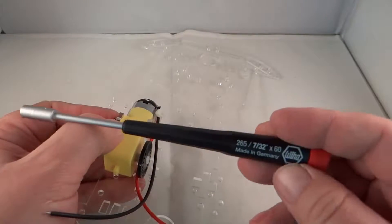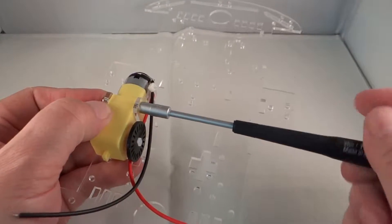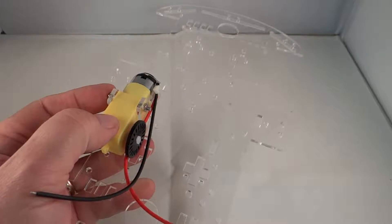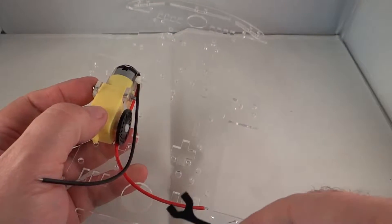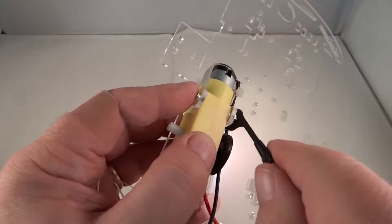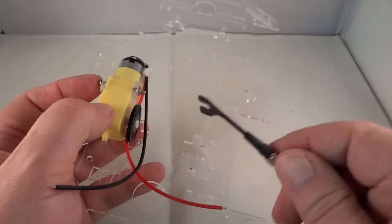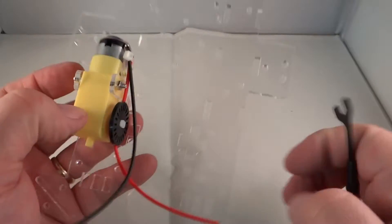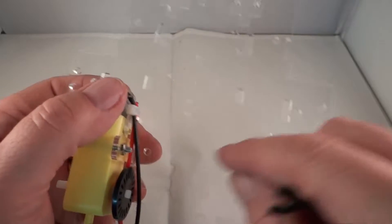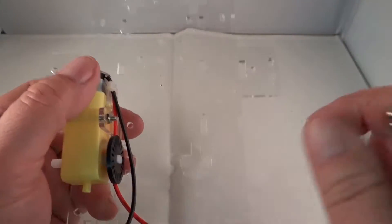You can use either a 7/32nds nut driver or a metric 5.5mm will also work. This actually will come in handy when you put the other motor here, because you won't be able to get to this bottom screw with the nut driver. You'll be able to do that with the wrench.